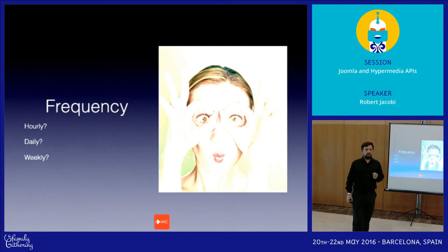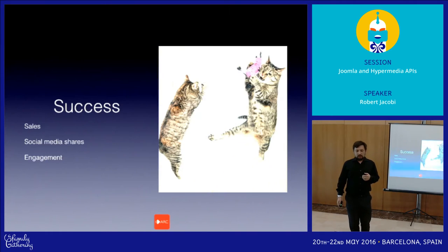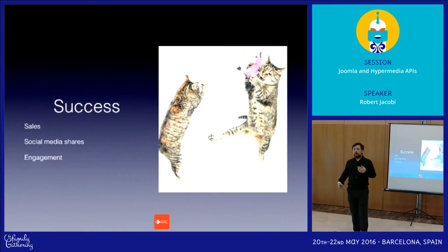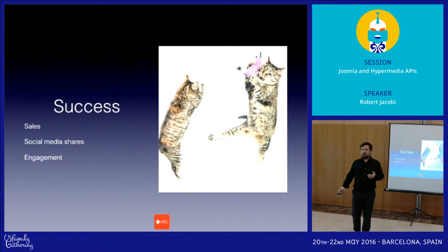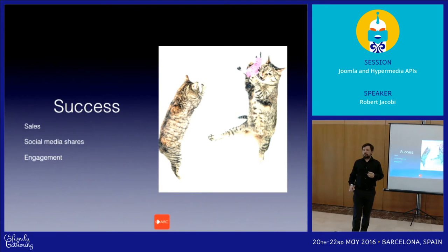Frequency: is this hourly, daily, monthly? How long do you wait to update content? How long is it being updated from other sources? Looking at the success of that content — is it generating the sales you want? Do you want social media click-throughs, retweets, follow-throughs? Do you want engagement to actually be offline? Do you want that content to somehow generate a response via a phone call or mail?